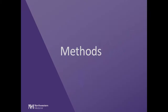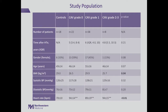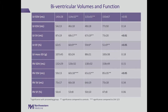Our study population comprised 68 patients in CAV grades 0 to 3 compared with 18 controls. Looking at demographics, the groups differed significantly in BMI, which was higher in controls, and in heart rate, which was higher in transplanted patients — as expected, because they have lost vagal control over heart rate.